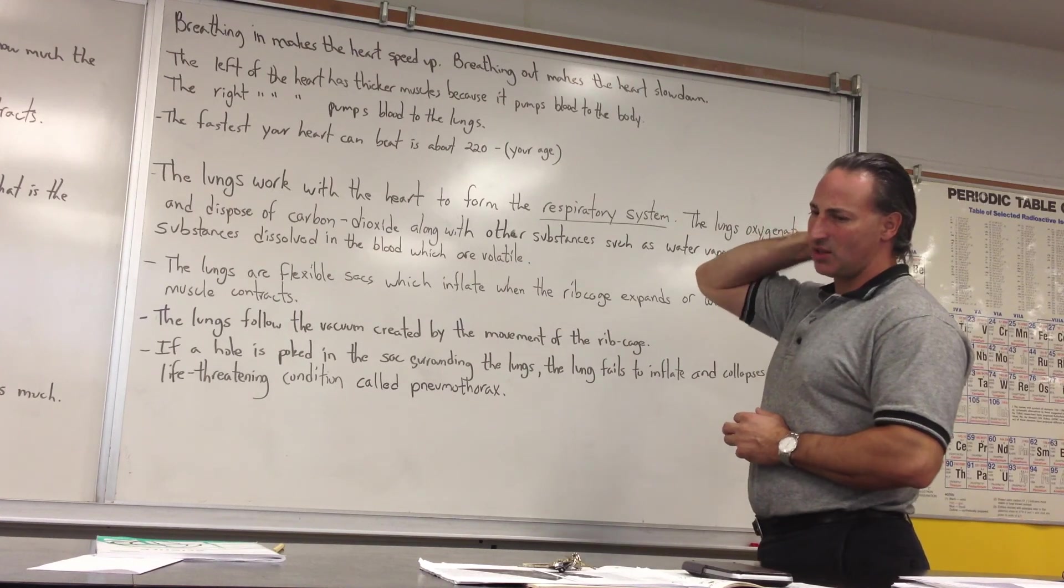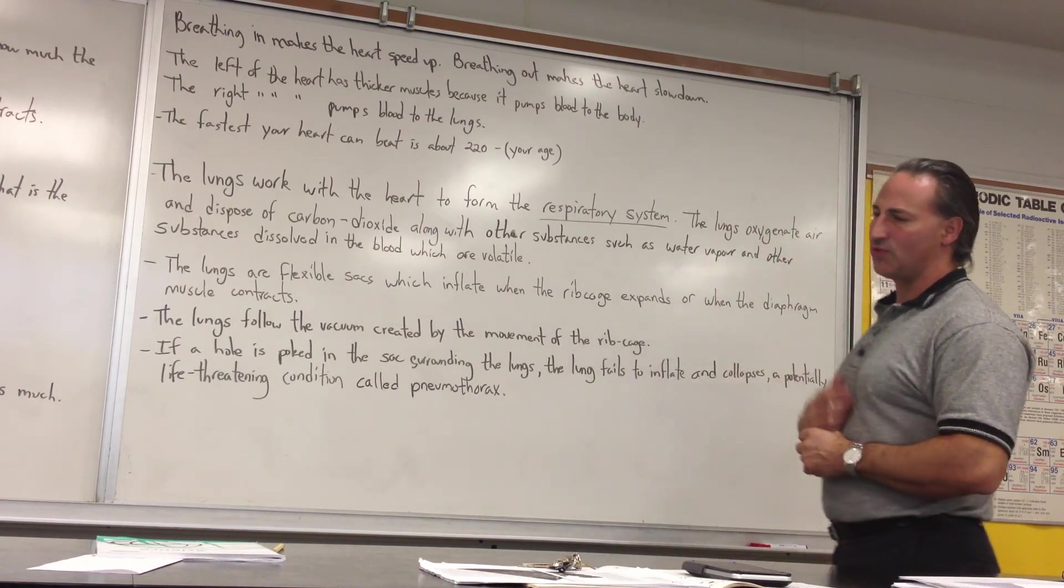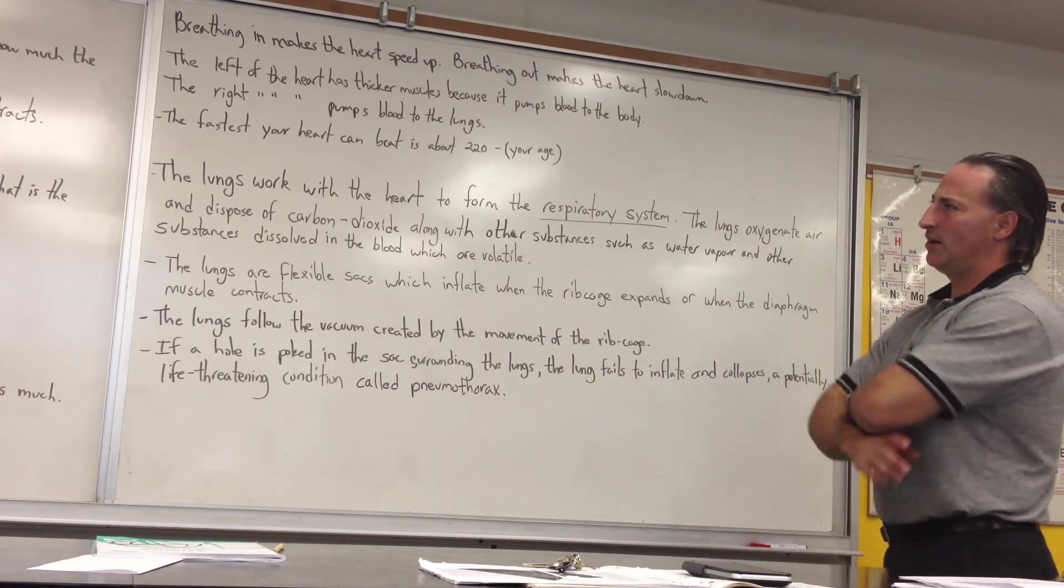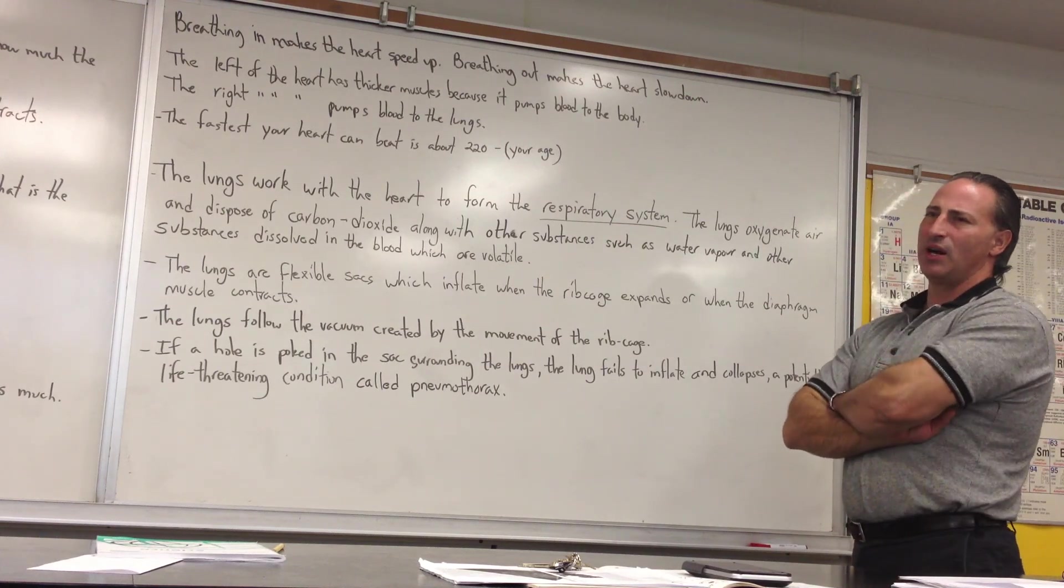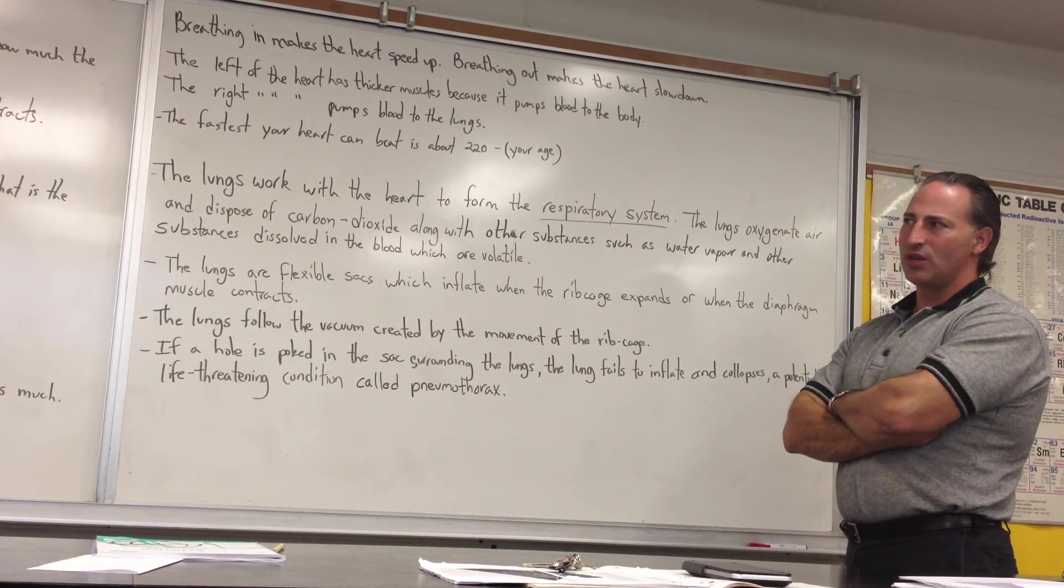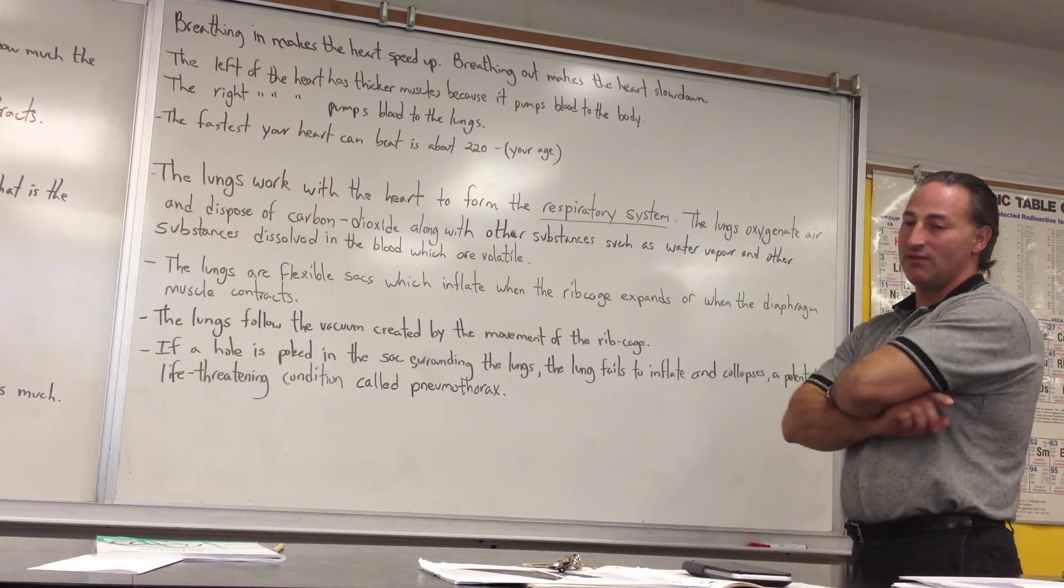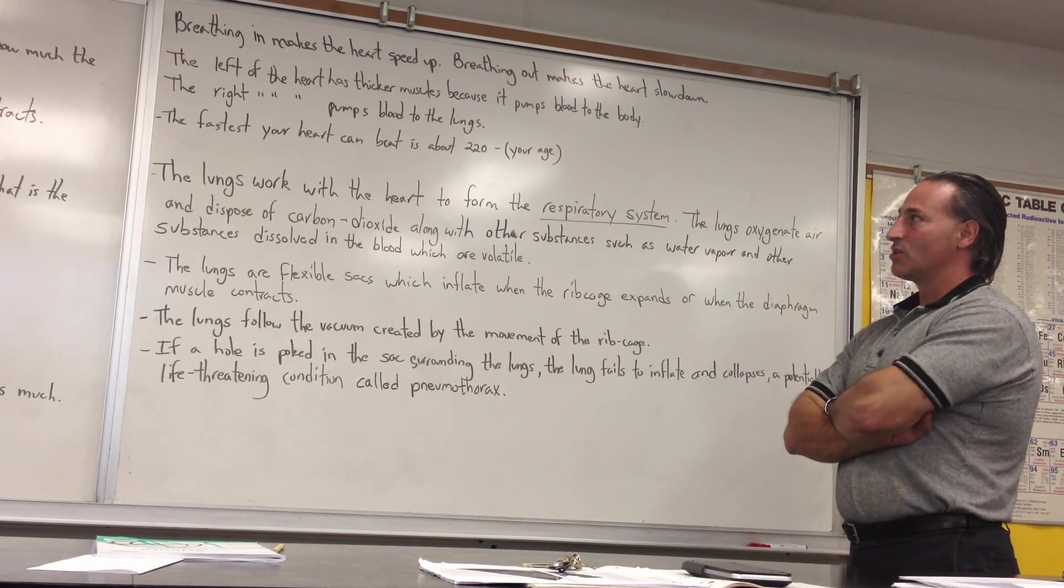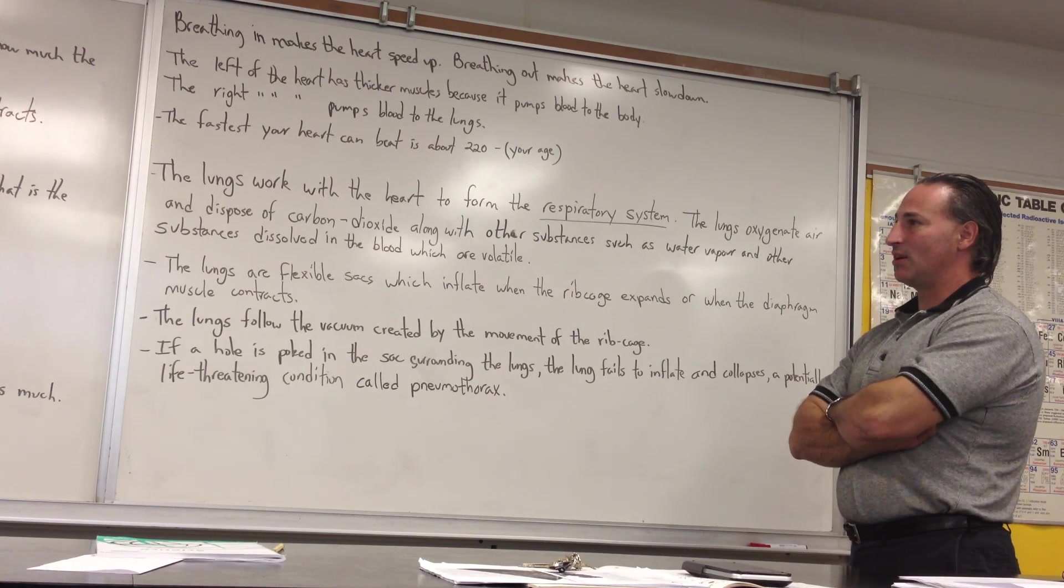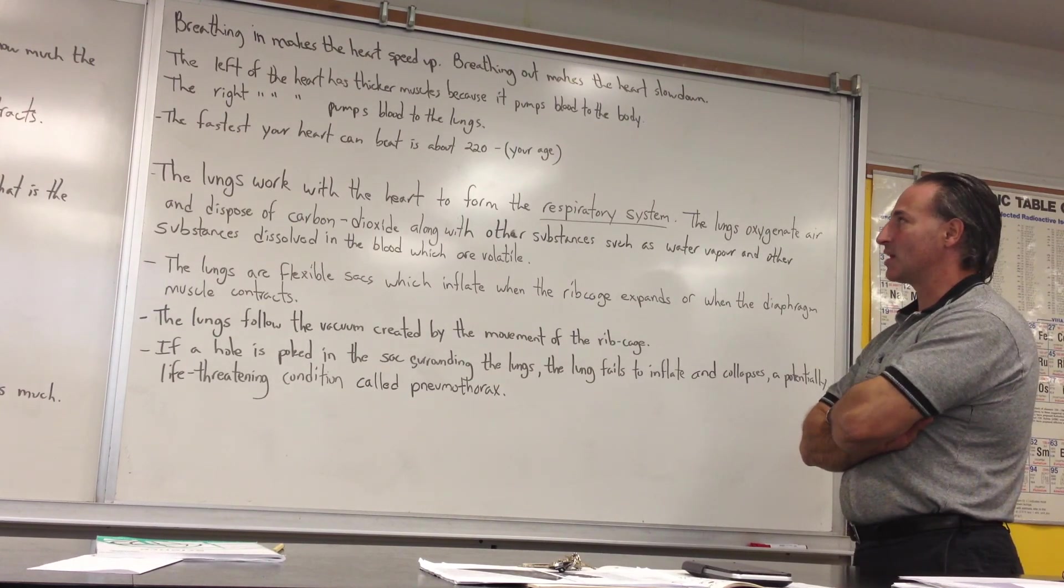Now, there are all sorts of things that can go wrong when the heart is forming. And there are birth defects, for example, where the chambers are joined where they shouldn't be, or sometimes you can even have the artery and the vein reversed. So, the children who are born with these defects have to have emergency surgery to fix themselves.